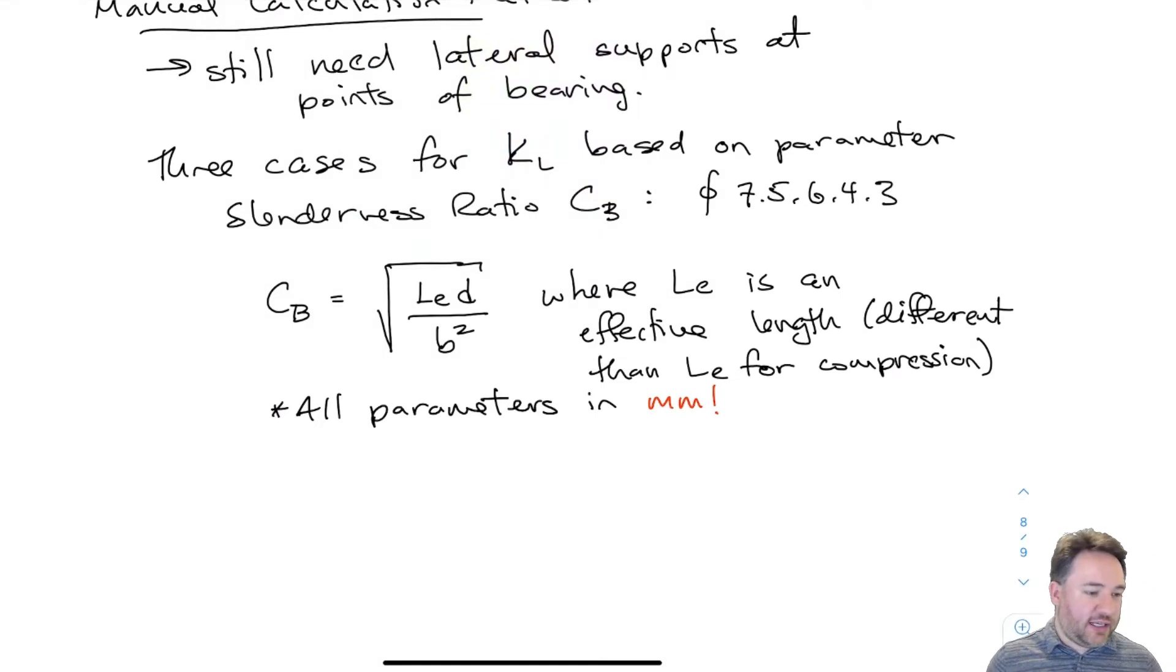LE is an effective length, similar to what we had for compression buckling where we had K times L. This is a different effective length. Instead of getting K from boundary conditions like we did for compression, we'll determine LE from tabulated values in Table 7.5.6.4.3, all in mm.